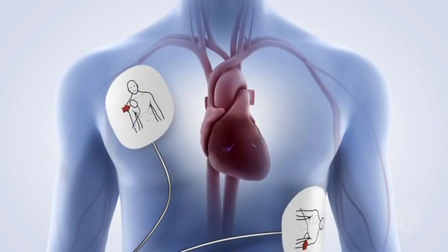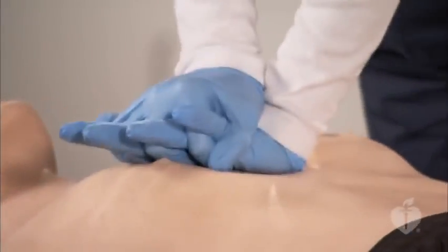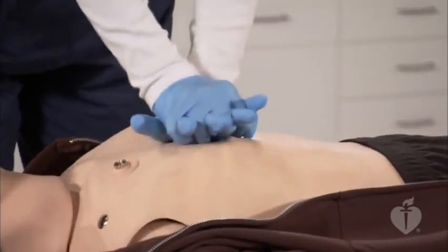High-quality BLS is the foundation for saving lives following sudden cardiac arrest. If these steps are performed rapidly and well, the patient's chance of survival increases. The effectiveness of advanced life support measures depends on high-quality BLS. When a patient goes into cardiac arrest, one of the common presenting rhythms is ventricular fibrillation, or VF. The heart is quivering but not effectively pumping blood to vital organs. High-quality chest compressions maintain blood flow to vital organs, especially the heart. Chest compressions are the highest priority in the first minutes of cardiac arrest.